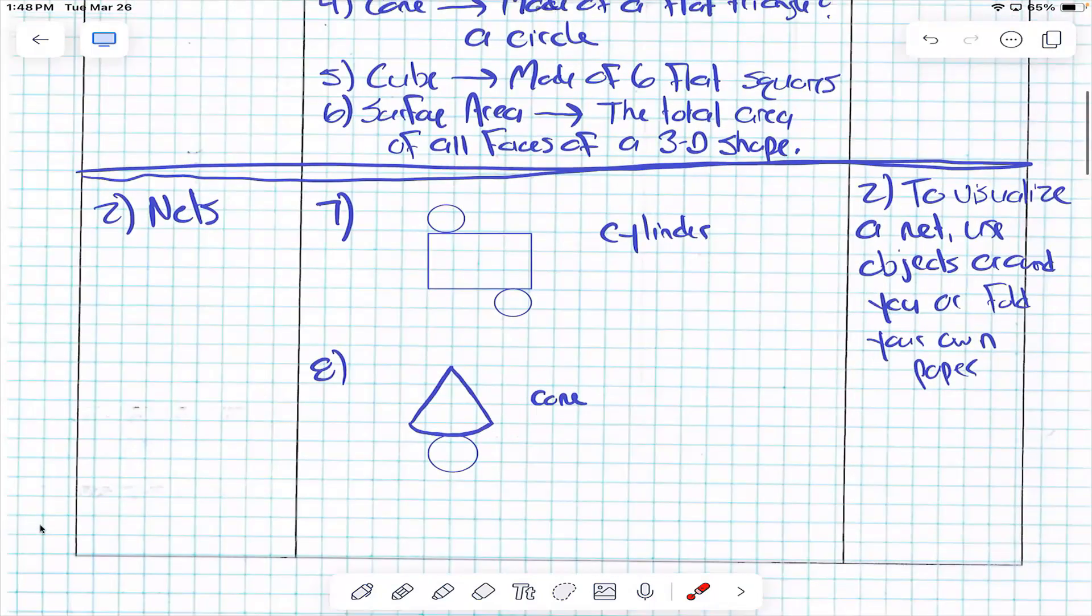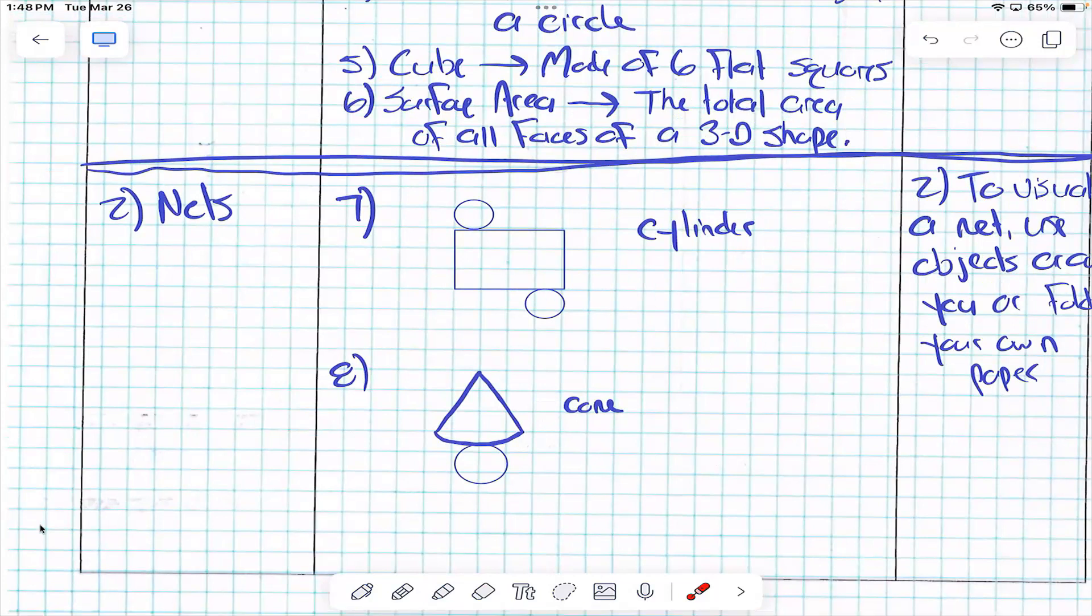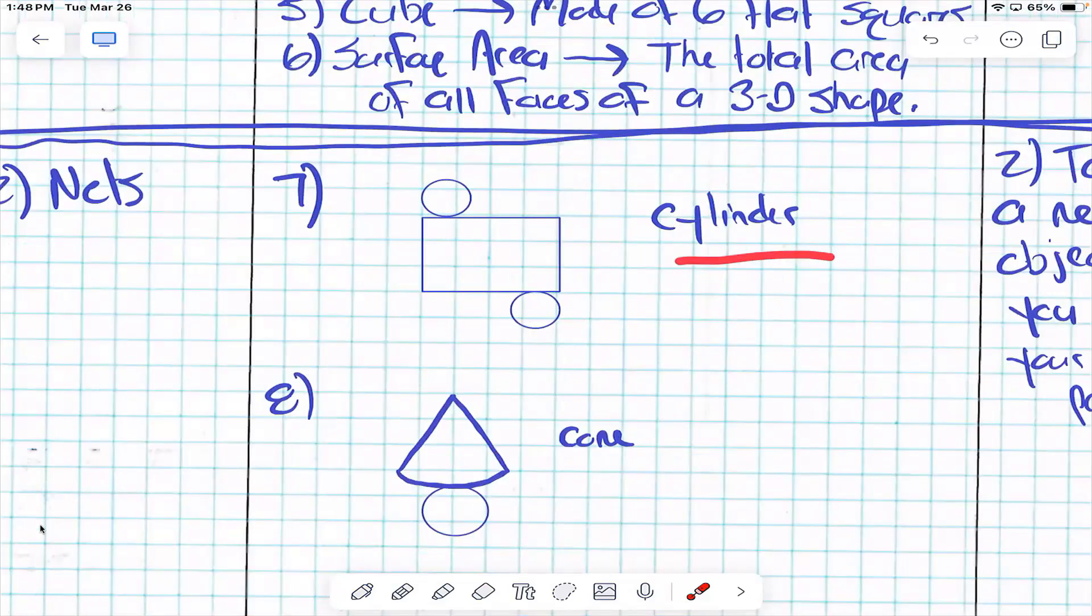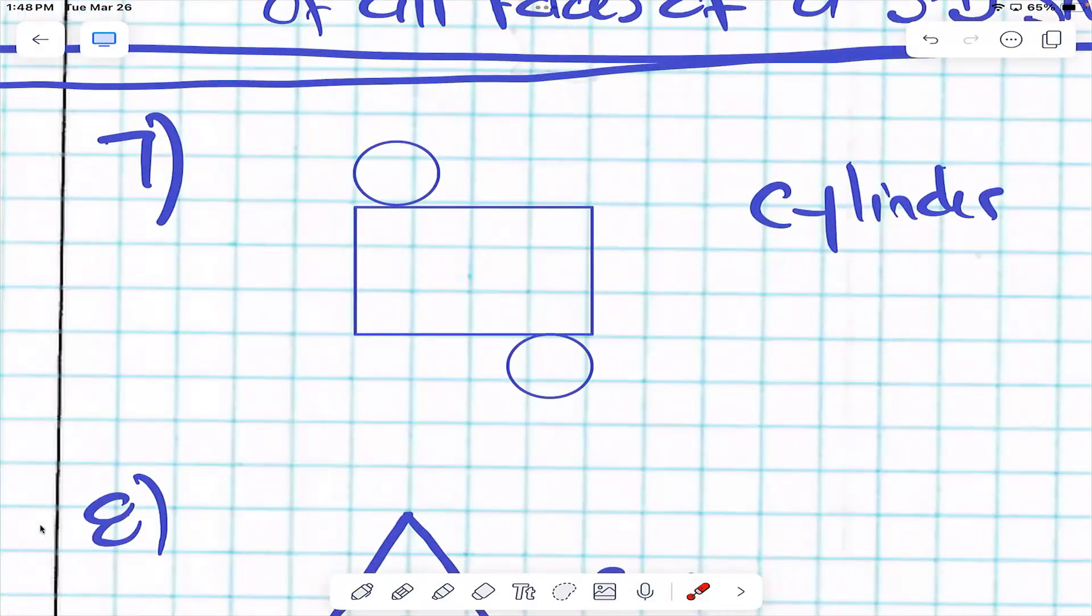Let's talk about nets. This is a net. It's a flattened version of a 3D shape. What 3D shape did we flatten to make this net? If you took this and you use this for the bottom and this for the top and you kind of just like wrap that around, it would make like a water bottle looking thing almost, wouldn't it? That's cylinder.